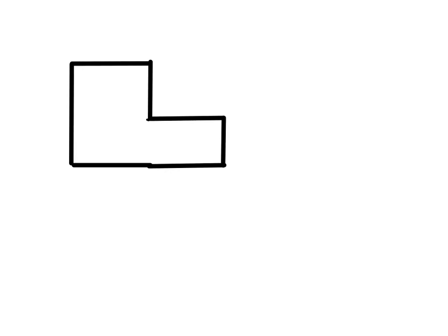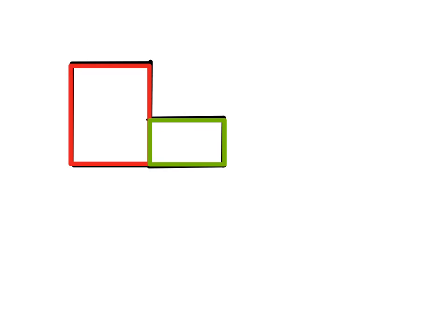This video is going to look at finding the perimeter of composite figures. The word composite means made up of more than one thing. When we're talking about a composite figure, we're talking about a figure that's made up of different shapes. Here we can see we have a rectangle and over here is another rectangle — essentially putting two rectangles together. So we're going to be looking at composite figures and finding perimeter today.